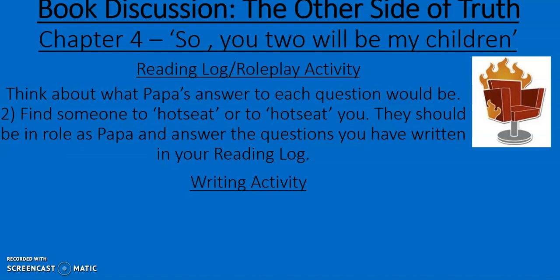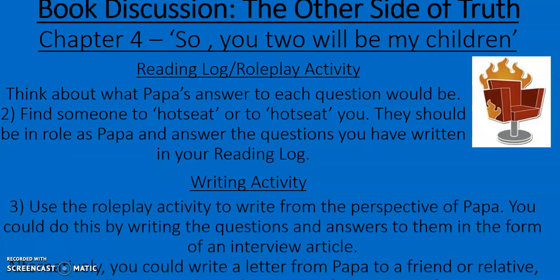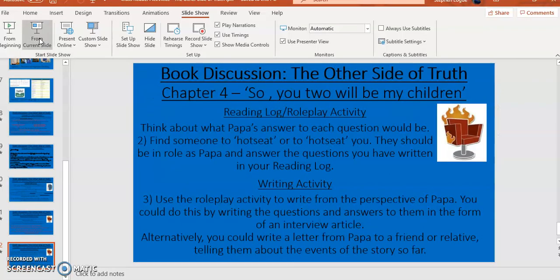Once you've done this, I'd like you to do this writing activity. Use the roleplay activity to help you write from the perspective of Papa. You could do this by writing down the questions you asked and the answers either you or the person you hot seated gave — perform an interview article. Alternatively, you could write a letter from Papa to a friend or relative, telling them about the events of the story so far.